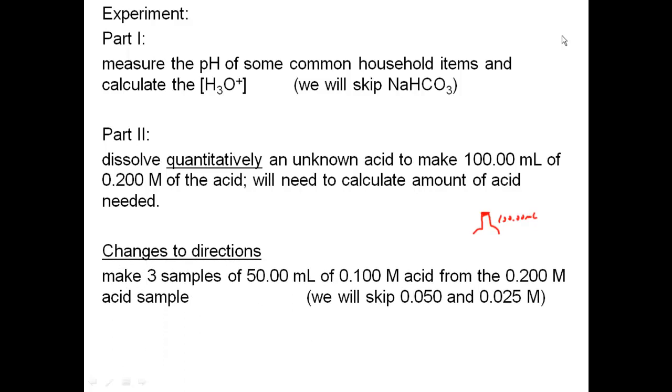Any changes to the directions? Yes. We're going to make three samples of 50 mL of 0.1 molarity of acid from that 0.2 sample. So we're making 50 mL of 0.1 from that 0.2 that we made in that step above. They're all going to be the same concentration of 0.1, so you're going to have three samples of 0.1 molarity. We're not doing the 0.05 or the 0.025. So you're just going to end up making a bulk 0.2. From that bulk 0.2, you're making three 0.1s. So you have to do C1V1 equals C2V2 to calculate. We're cutting it in half, so easy calculation.